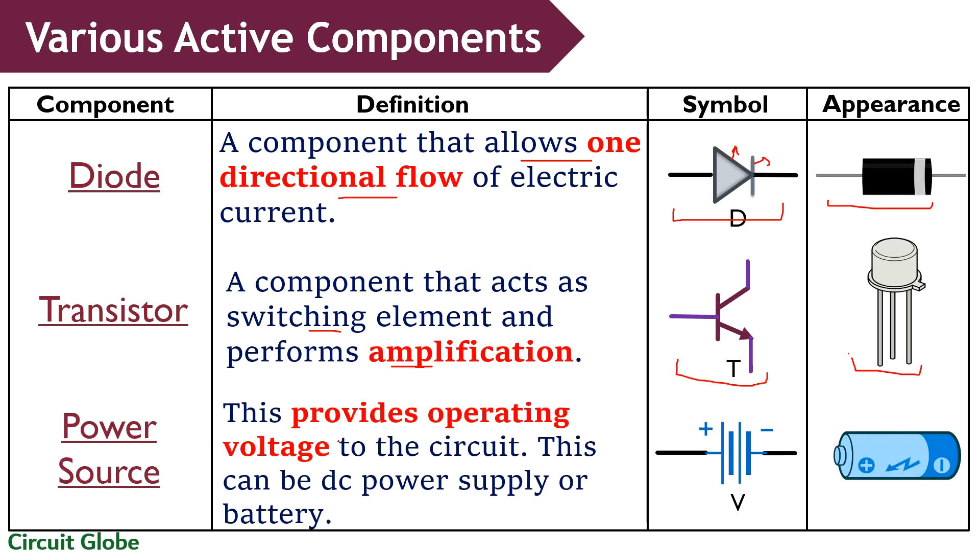Guys, our next component is power source that provides operating voltage to any circuit. It can be a DC power supply or a battery. Here, we can clearly see the symbolic representation of a battery. A battery changes chemical energy into electrical energy.